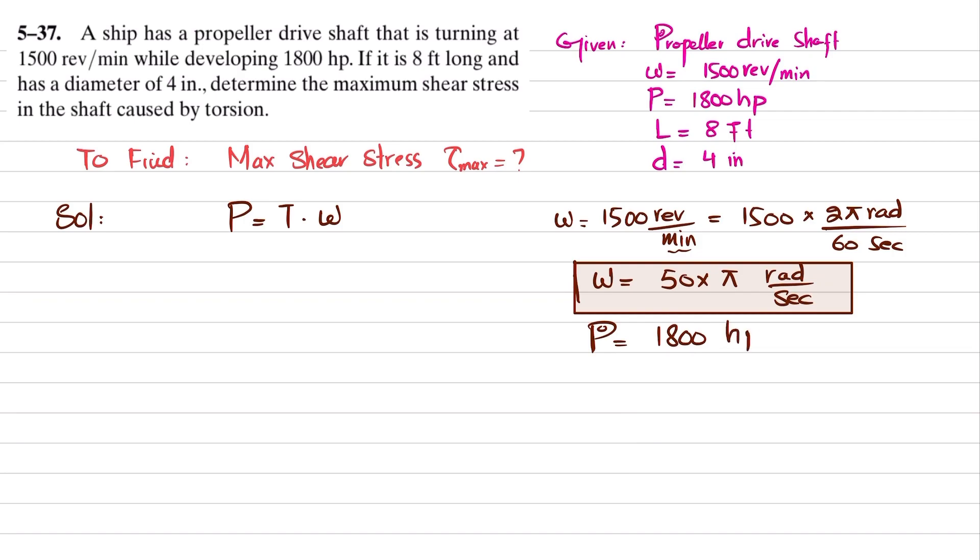1800 horsepower, and we know that one horsepower equals 550 pounds-feet per second. When you calculate this, you will get power equal to 990,000 pounds-feet per second.